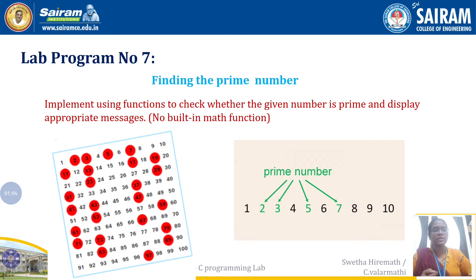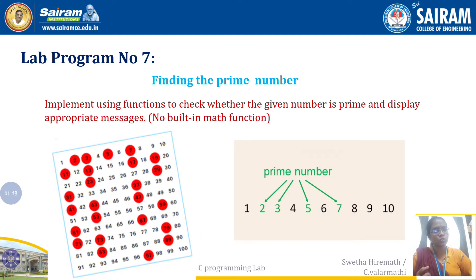If a number is divided by 1 or by itself only, that number is called a prime number. For example, 2 is divided by 2 or by 1, and 3 is divided by 3 or by 1. But 4 is not a prime number because it can also be divided by 2. So our task is to find whether a given number is prime or not.